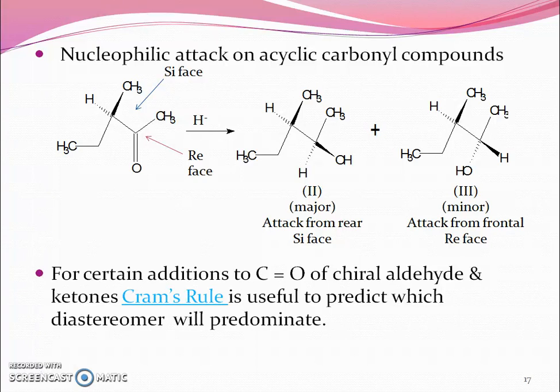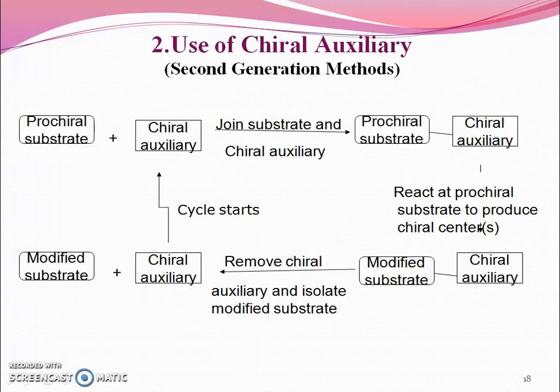For certain additions to the carbonyl group of chiral aldehydes and ketones, Cram's rule is useful to predict which diastereomer will predominate. Use of chiral auxiliaries is the second generation method. The cycle shows that a prochiral substrate attaches with the chiral auxiliary, then forms the product, and finally the chiral auxiliary is removed. The auxiliary can be used again and again.